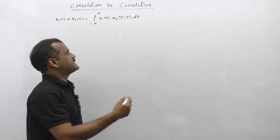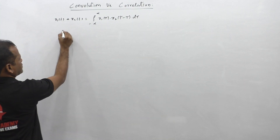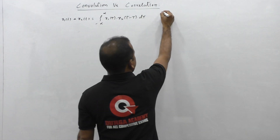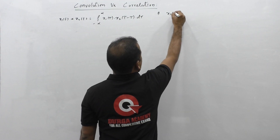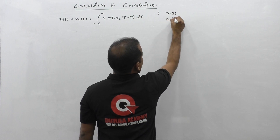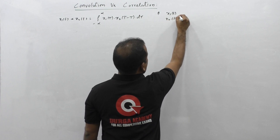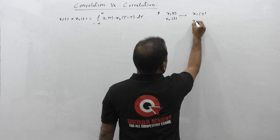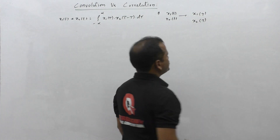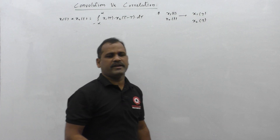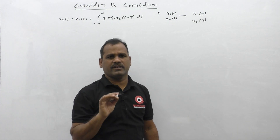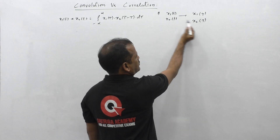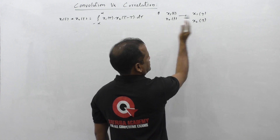Let us recall how we executed this integral step by step. First, given x1(t) and x2(t), we change the time index from t to tau — so we get x1(tau) and x2(tau). That is what we have done in the first step of the convolution procedure.